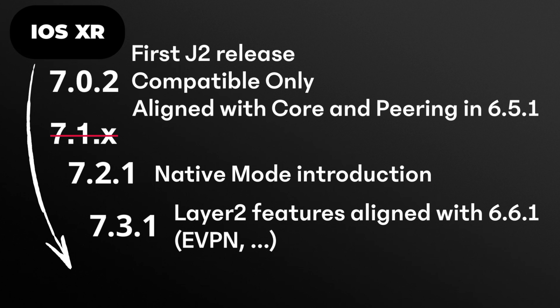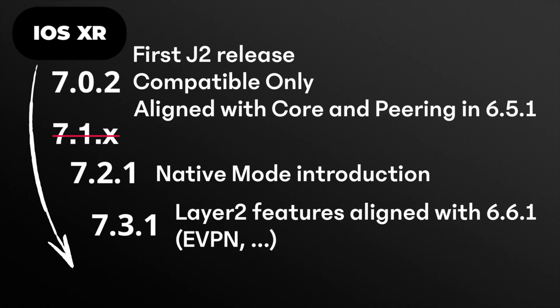Also 7.3.1 is the first release for the fixed systems powered by Jericho 2 and as we explained, by default they enable native mode. It's not the purpose here to discuss roadmap items, but we can say that we continue closing the gaps with 7.4 and 7.5 versions. It's also in these releases that we'll see more and more features specifically leveraging native mode, like the MDB profiles — L3 Max, SE, and L2 Max — which will permit specialization of the routers in specific roles.